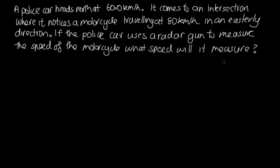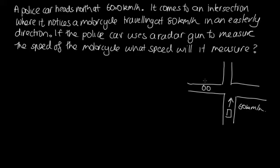So let's start by drawing a diagram. So here's the intersection. And we've got a police car here travelling in the north direction at 60 kilometres per hour. And we've got a motorcycle travelling towards the east at 80 kilometres per hour.